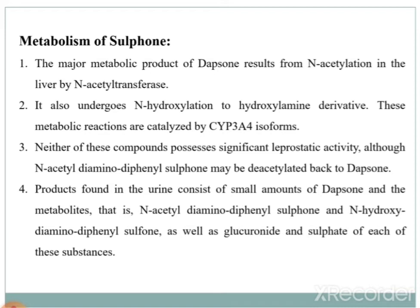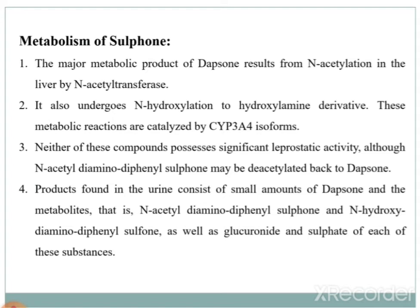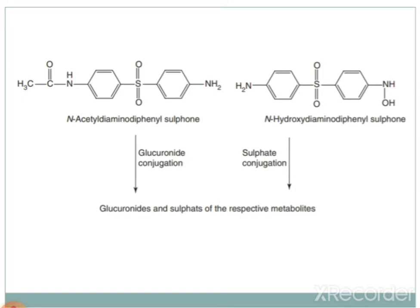Urinary products consist of small amounts of Dapsone and its metabolites: N-acetyldiaminodiphenyl sulfone, N-hydroxydiaminodiphenyl sulfone, as well as glucuronate and sulfate conjugates of each. The schematic representation shows N-acetyltransferase producing N-acetyldiaminodiphenyl sulfone, followed by glucuronate and sulfate conjugation to form respective metabolites.